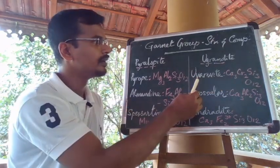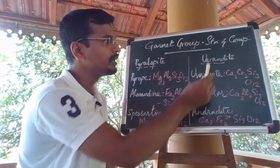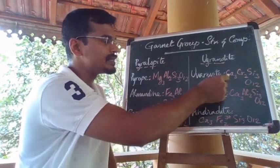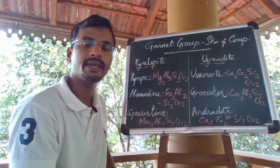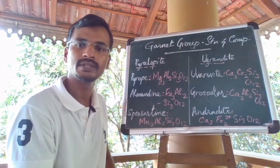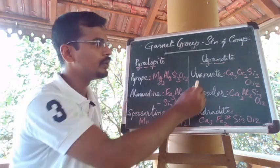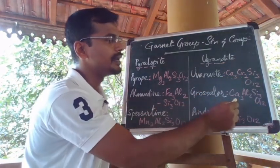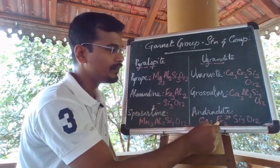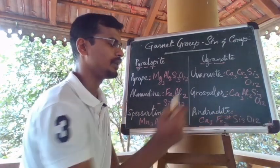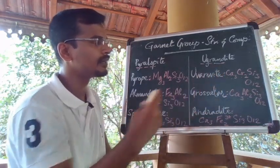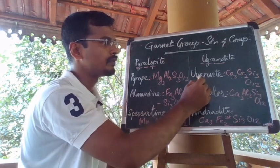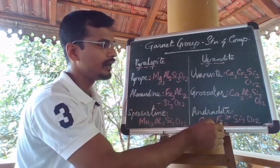The ugrandite name is derived from U for uvarovite, GR for grossular, and AND for andradite. In this series all X-sites are occupied by calcium and the Y octahedral site is occupied by trivalent cations such as chromium, aluminium and Fe3+. The formula for uvarovite is Ca3Cr2Si3O12, for grossular it is Ca3Al2Si3O12, and for andradite it is Ca3Fe3+2Si3O12, with calcium in the X-site and the respective trivalent cation at the octahedral site.